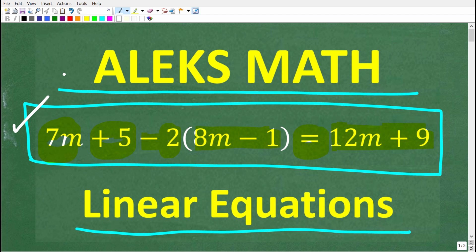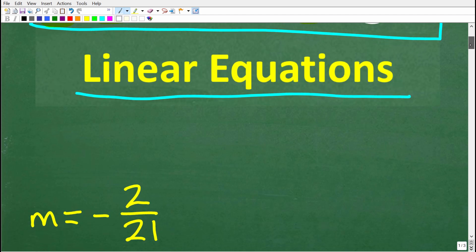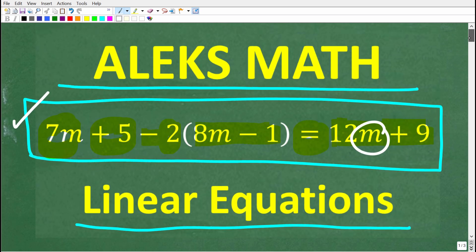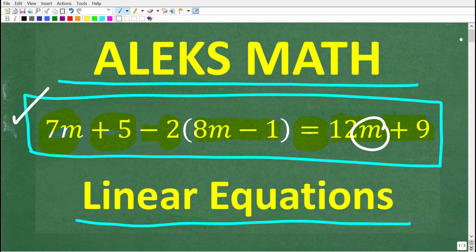You definitely need to understand linear equations to do well on the ALEKS math placement test. So let's take a look at the answer. We're trying to solve for the variable m. So m is equal to negative 2 over 21. Now, if you got this right, that is fantastic. But there is a lot of math on the ALEKS, so this is only one aspect to this. And if you didn't get this right, I'm going to review the full solution right now.